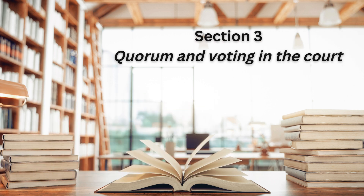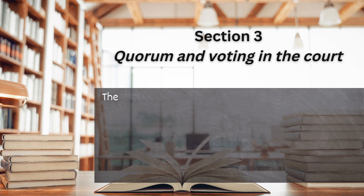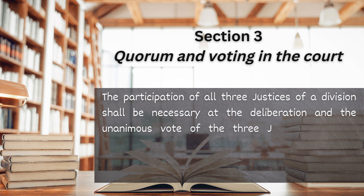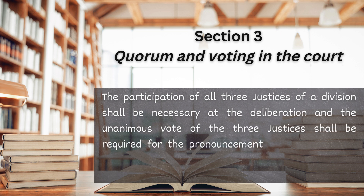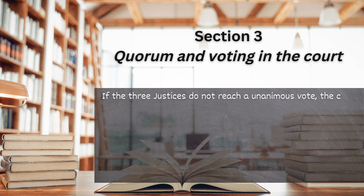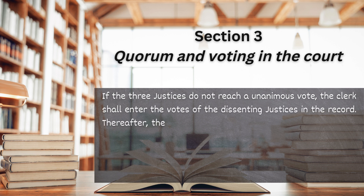Section 3. Quorum and Voting in the Court. The participation of all three justices of a division shall be necessary at the deliberation, and the unanimous vote of the three justices shall be required for the pronouncement of a judgment or final resolution. If the three justices do not reach a unanimous vote, the clerk shall enter the votes of the dissenting justices in the record.